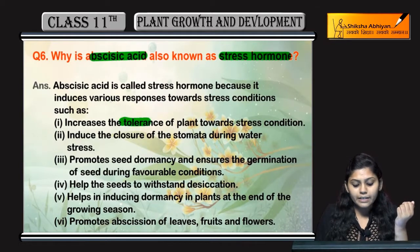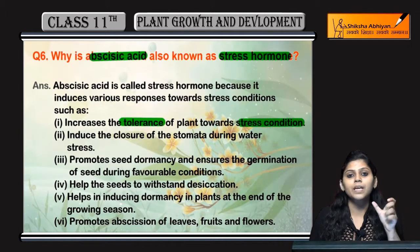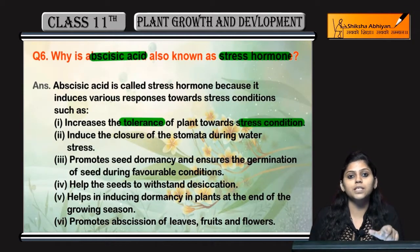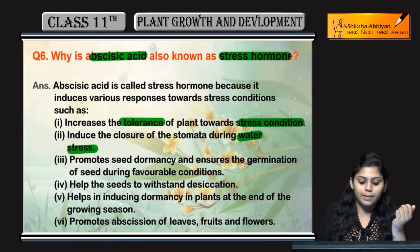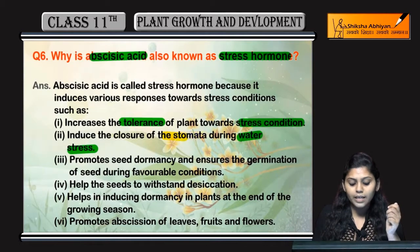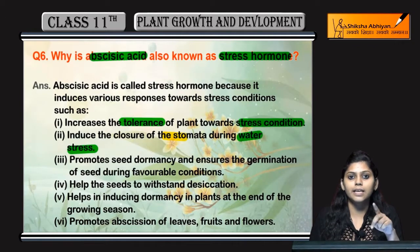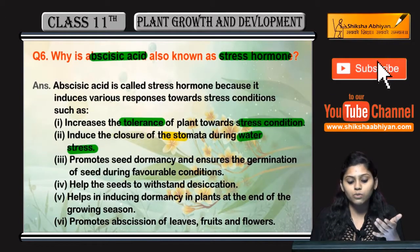Because यह increase करता है tolerance of plant towards stress condition. Means stress condition में plant tolerate कर सकी वो stress condition तो abscisic acid उसे help करता है. For example, अगर water stress है, means water कम है, then जो भी stomata है वो close हो जाते हैं ताकि water loss कम हो. यह abscisic acid की वजह से होता है — abscisic acid induce करता है closure of stomata जब water stress condition हो.